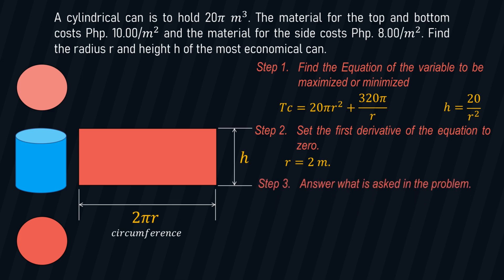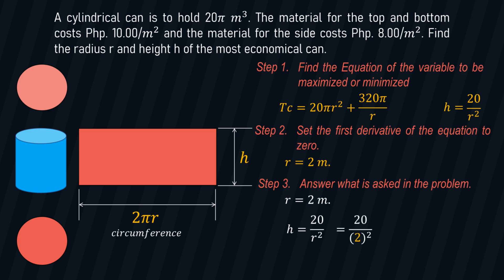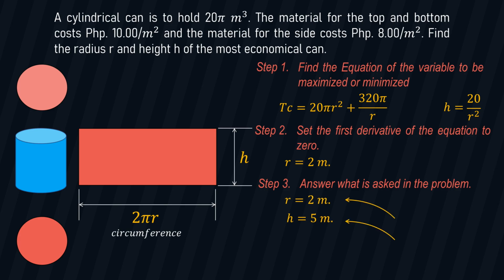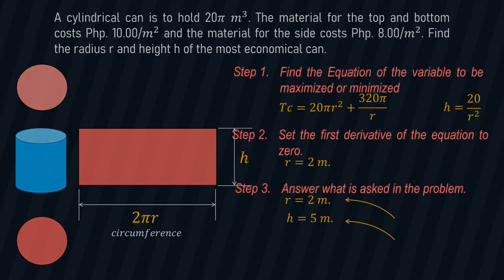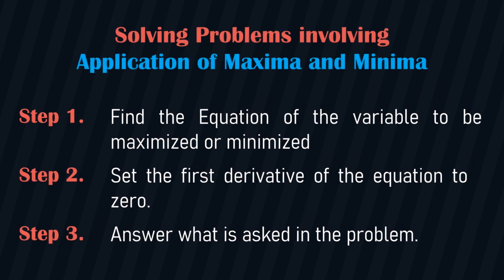Step number three: the problem is asking for the value of the radius and the height of the cylinder. We already have r = 2 meters. Solving for H using H = 20/r² and substituting r = 2, we get H = 5 meters. These are the final answers for this problem. To conclude, these are the steps in solving problems involving maxima and minima.